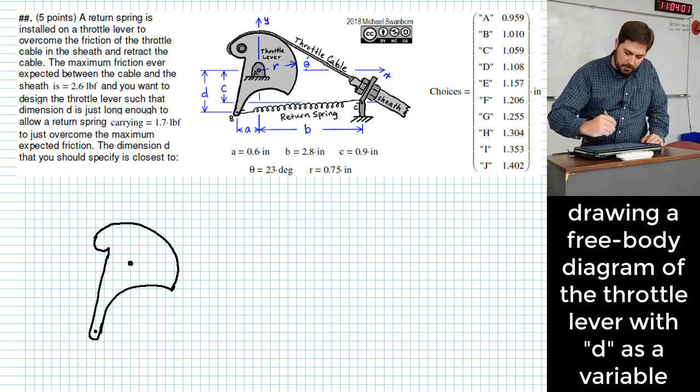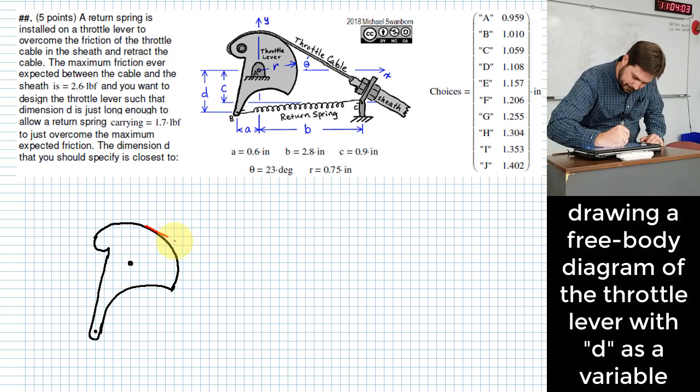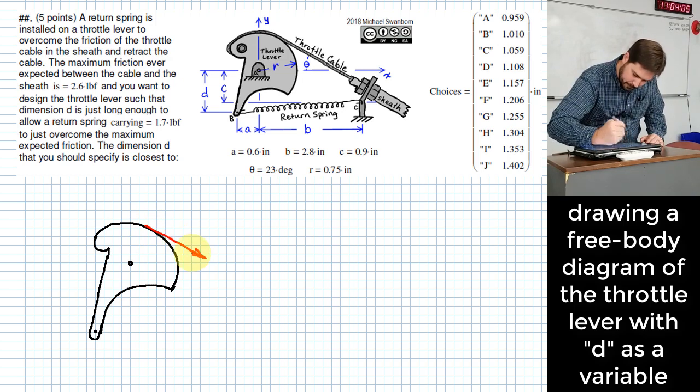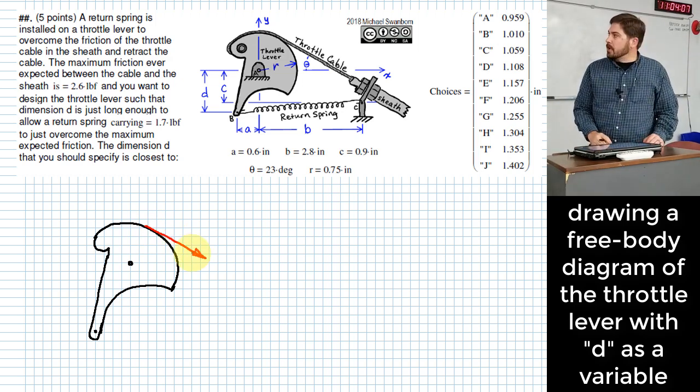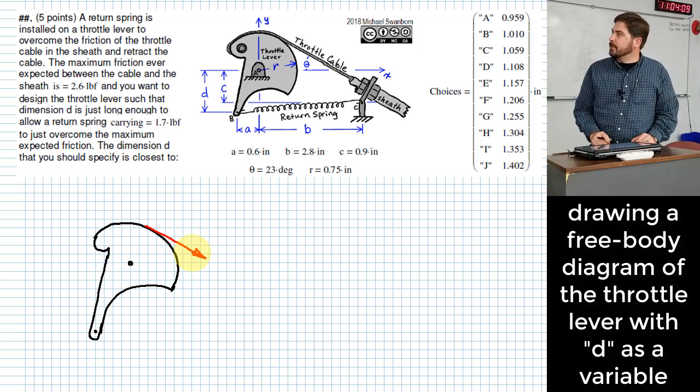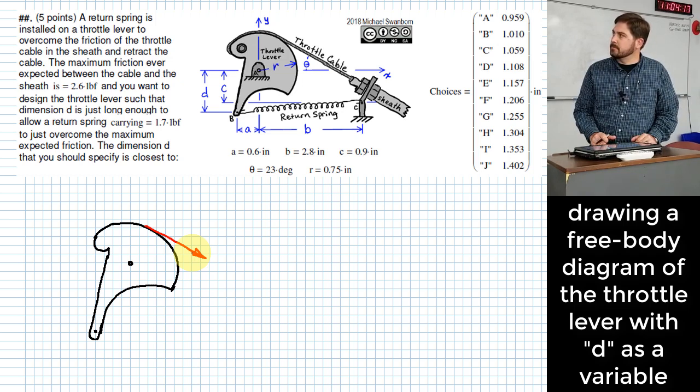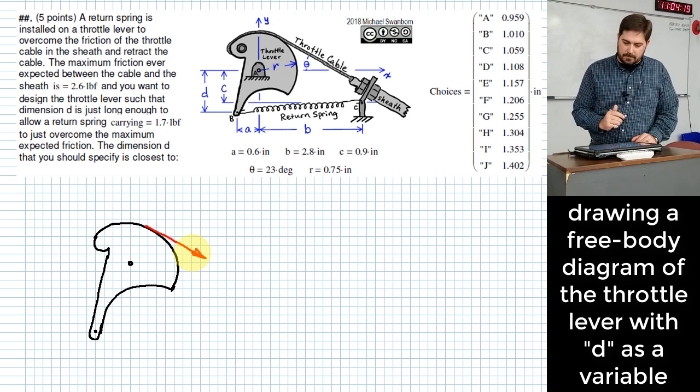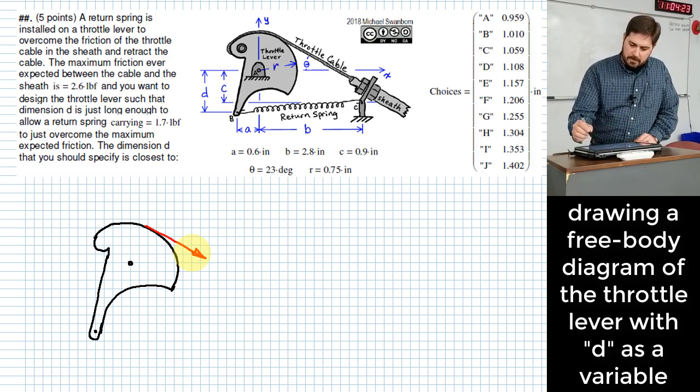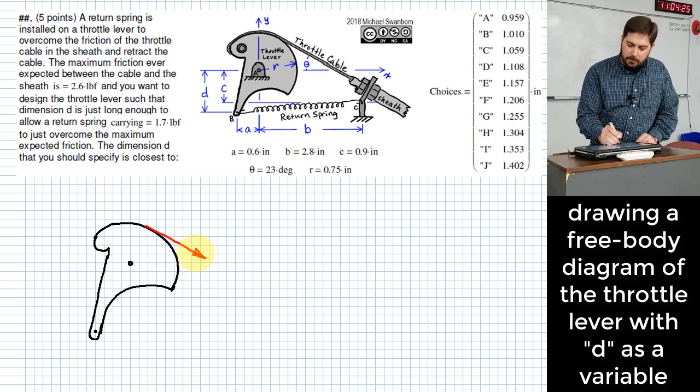Okay I've got a force in the throttle cable and that comes off tangentially off of the throttle lever that has a radius of R. Okay. Do I have a value for that force? This is basically the force in the cable.